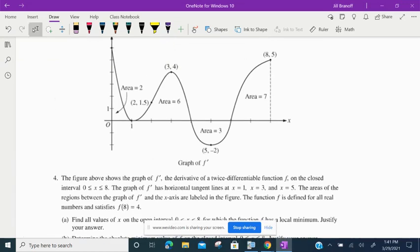This is 2013 FRQ number 4. The figure above shows the graph of f prime, the derivative of a twice differentiable function f on the closed interval from 0 to 8. The graph of f prime has horizontal tangent lines at x equals 1, x equals 3, and x equals 5. The areas of the regions between the graph of f prime and the x-axis are labeled in the figure.